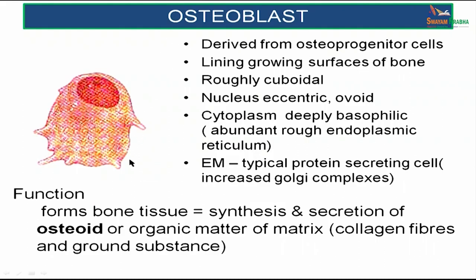Osteoblasts are derived from osteoprogenitor cells. They line the growing surfaces of bone and are roughly cuboidal in shape, with an eccentric ovoid nucleus. The cytoplasm is deeply basophilic due to abundant rough endoplasmic reticulum. Electron microscopy reveals it is a typical protein-secreting cell with many Golgi complexes. Their function is synthesis and secretion of osteoid — the organic matter of matrix, including collagen fibers and ground substance.